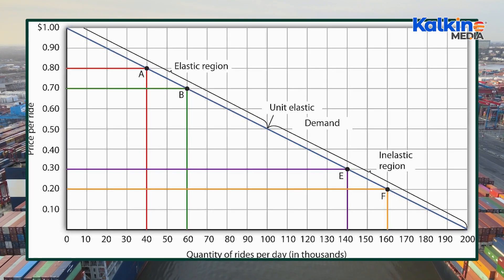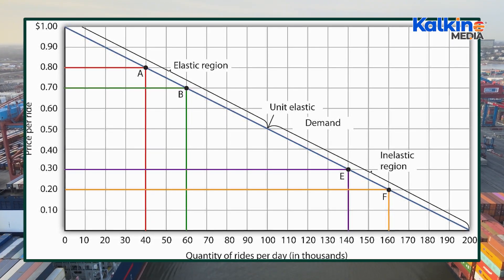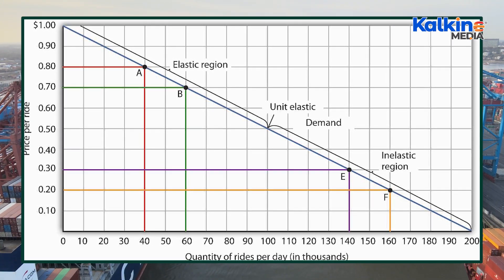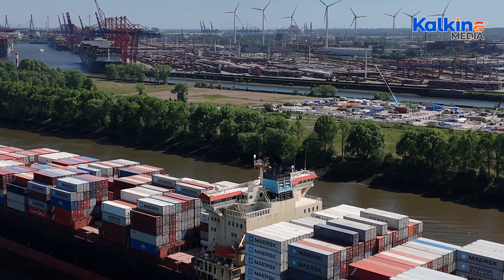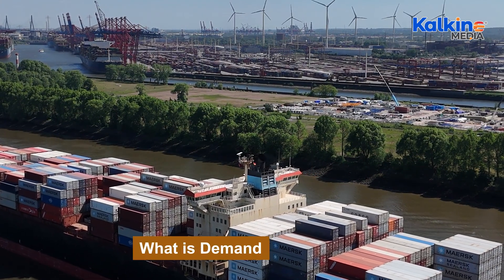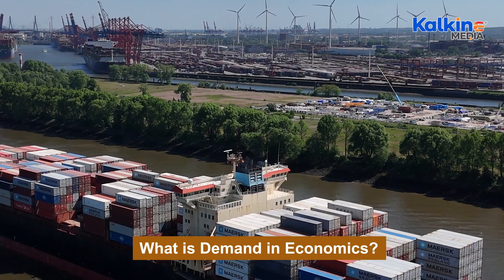Market equilibrium occurs when the quantity of a good or service demanded equals the quantity supplied, with the demand and supply curves intersecting at this balance point. Achieving market equilibrium ensures that consumers' needs are met without excess or shortage of goods.